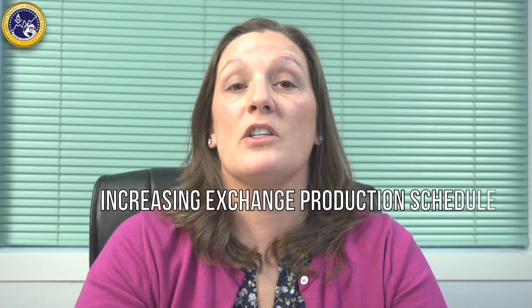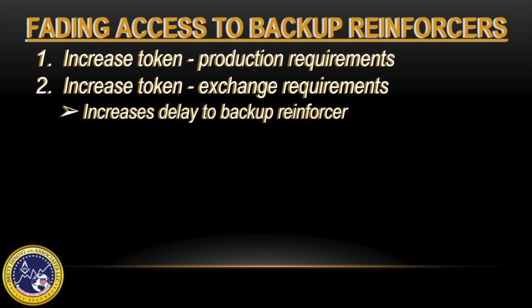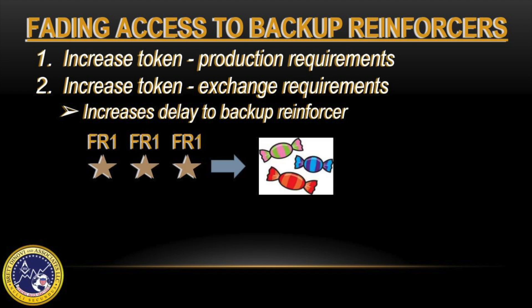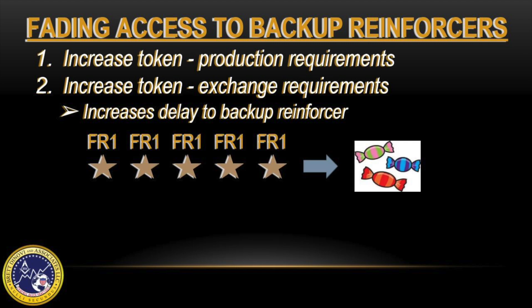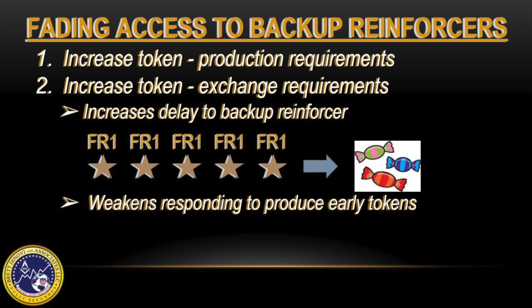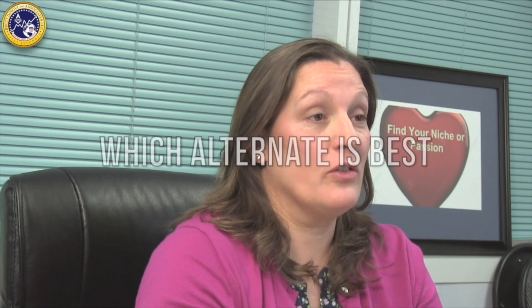When you increase the token production requirement, they now have to complete four or five demands to access the token, which can weaken responding to produce the token. Whereas increasing the exchange production schedule results in a longer delay to the backup reinforcer — instead of earning three tokens, you now have to earn five tokens — which weakens responding to produce tokens early in the system, because the earlier tokens signal a long delay to the backup reinforcers. So we need to look to the literature to help determine which of these alternatives is best.